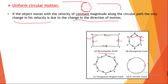This direction is continuously changing. If we draw velocity vectors at various points on the circle, the direction of motion is always changing because it is a circular track. Even if we change direction a little bit, the direction of motion will always change. This is called uniform circular motion.